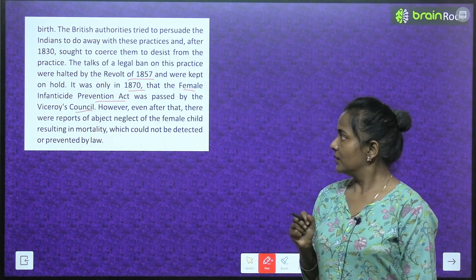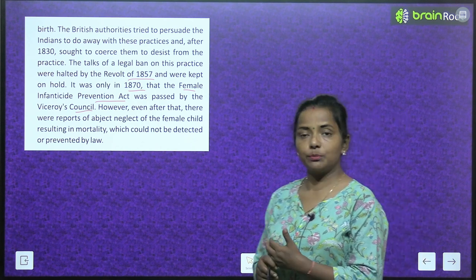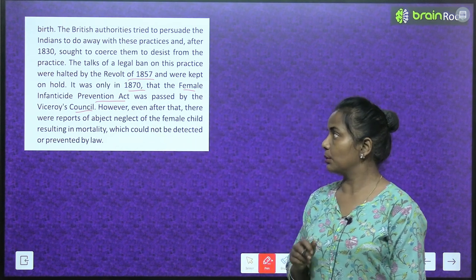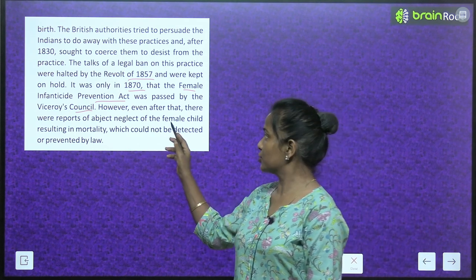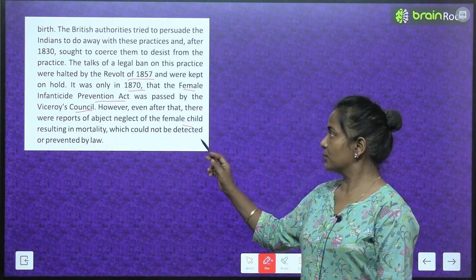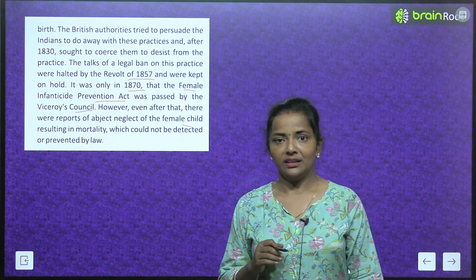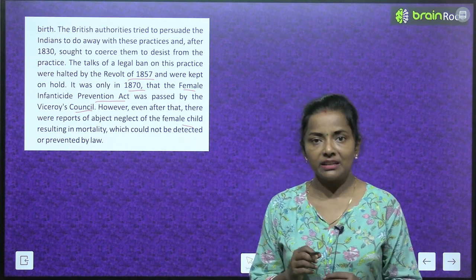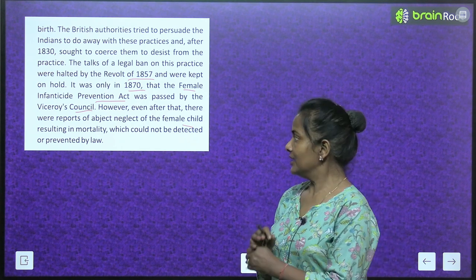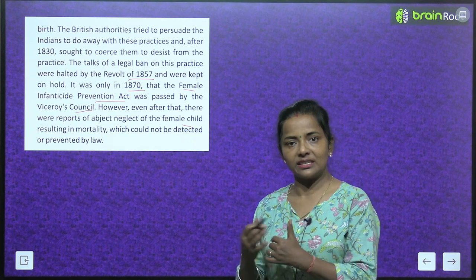However, even after the Female Infanticide Prevention Act was passed in 1870, there were reports of abject neglect of the female child resulting in mortality, which could not be detected or prevented by law.